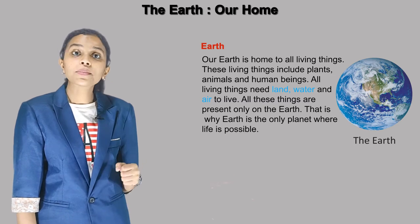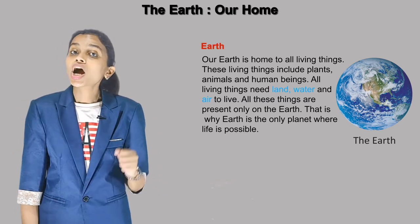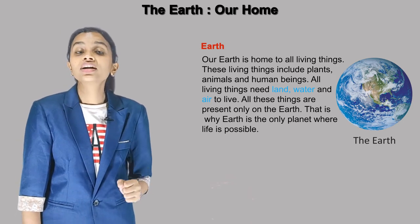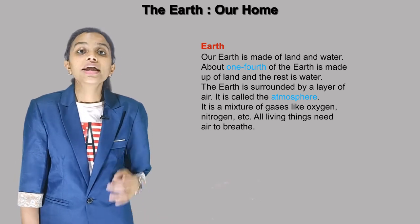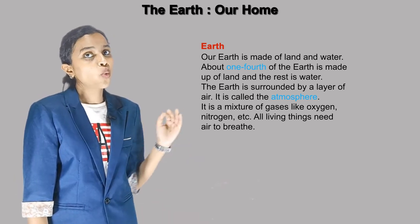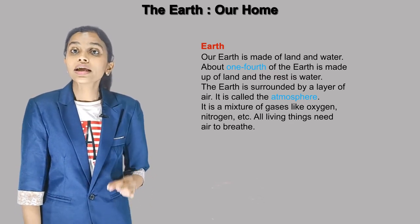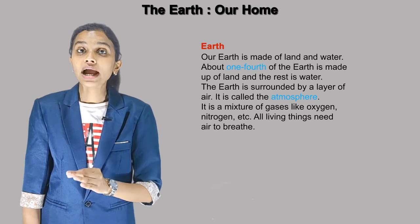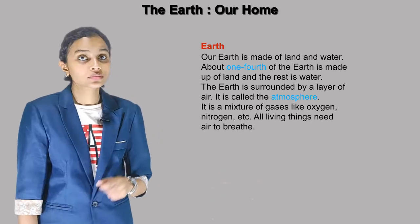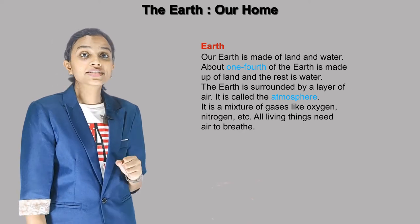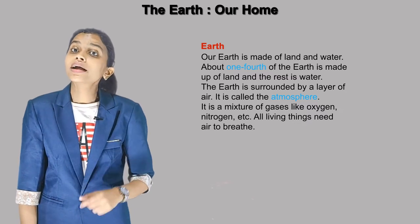All these things are present only on earth. That is why earth is the only planet where life is possible. Our earth is made of land and water — about one fourth of the earth is made up of land and the rest is water. The earth is surrounded by a layer of air called the atmosphere.